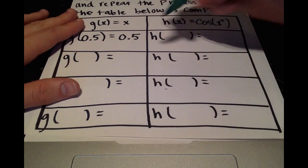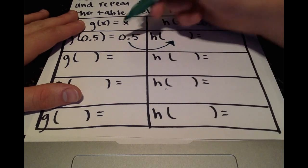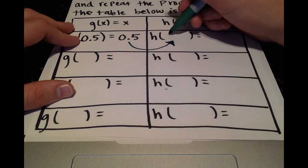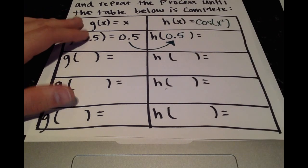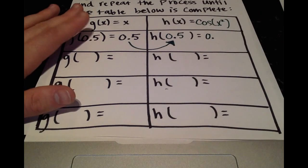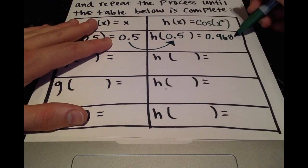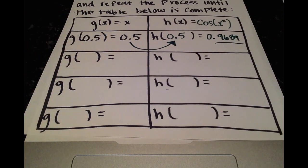And then the first step is to plug 0.5, plug the result of one function into the other function. So h of 0.5, what does that equal? It's going to be 0.9689. And also notice I use four decimal places because that's what they told us in the problem.